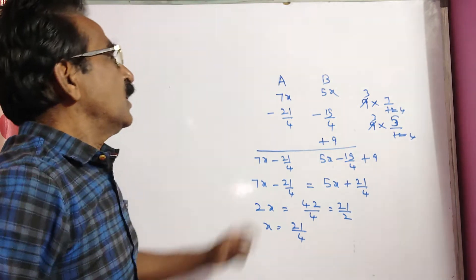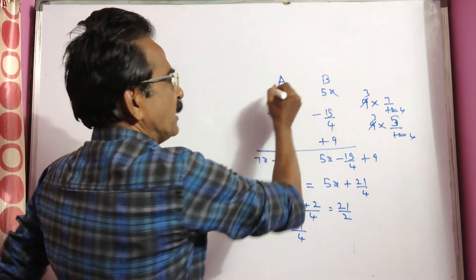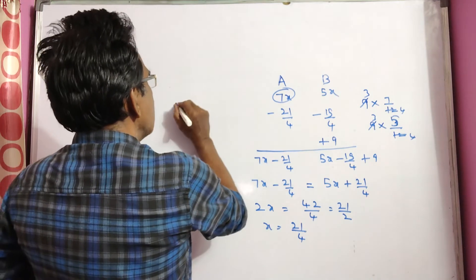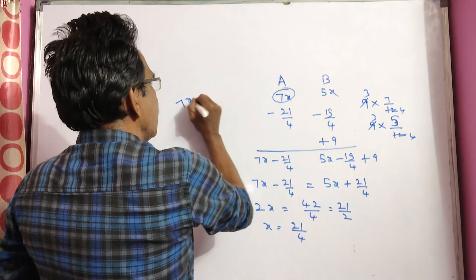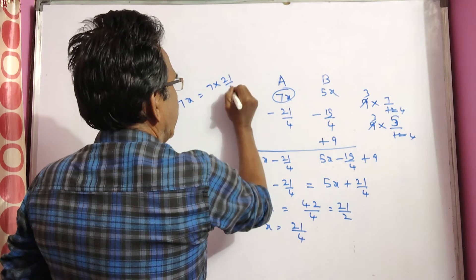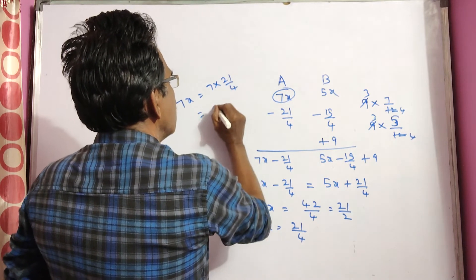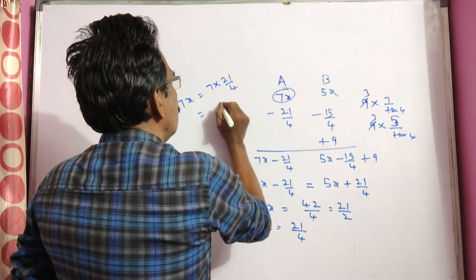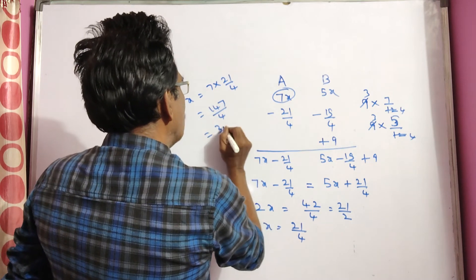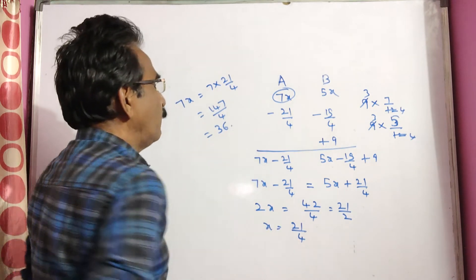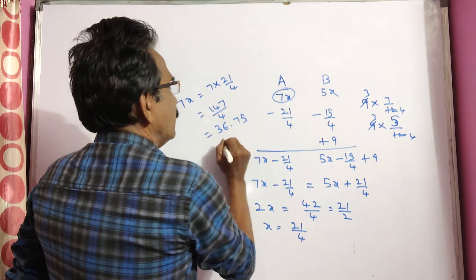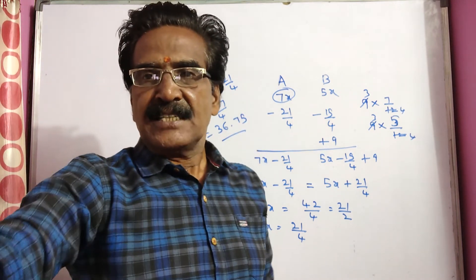Now we want the value of 7x, that is the quantity of liquid A. So 7x equals 7 into 21/4, which is 147/4. That is 36.75 liters of liquid A.